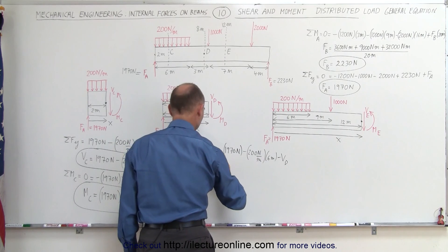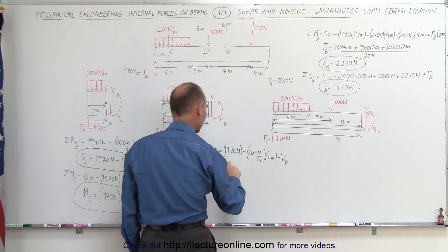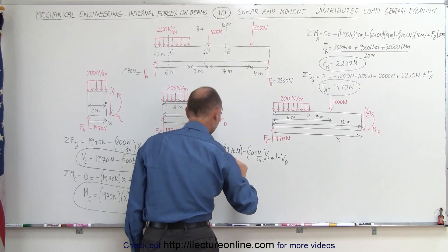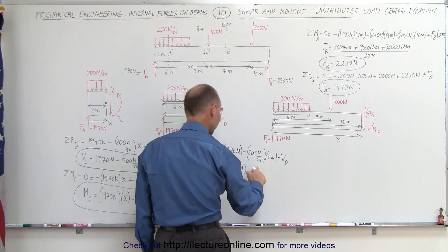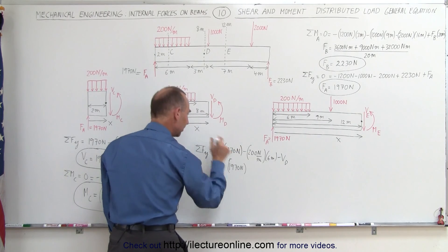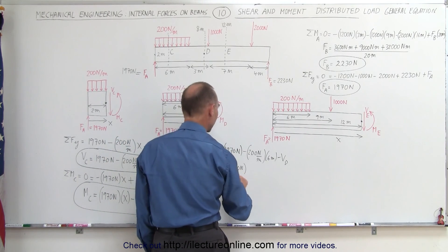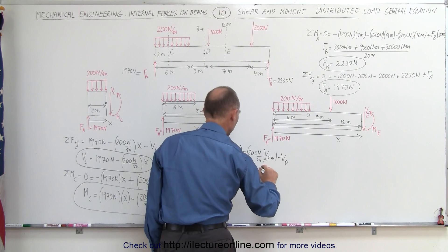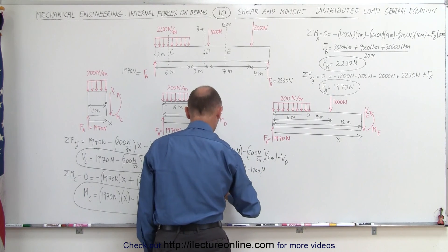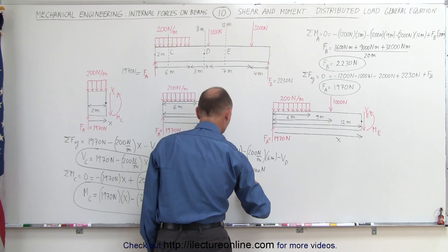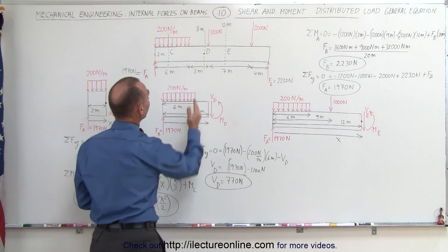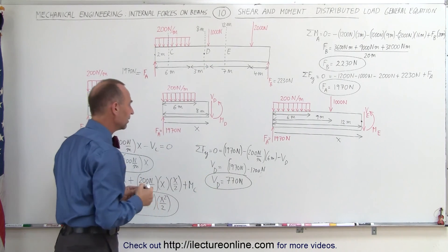Solving for V sub D — moving it to the other side gives a positive value — we get 1,970 N minus 1,200 N, which is 200 N/m times 6 m. So V sub D equals 770 N. Notice it is not dependent on X at all; it's the same shear force anywhere from 6 to 9 meters — no dependency on X.